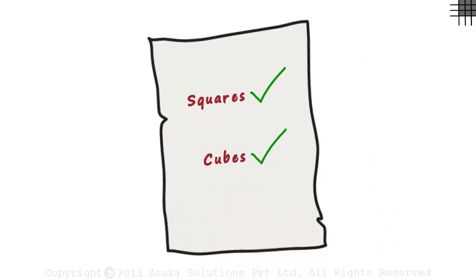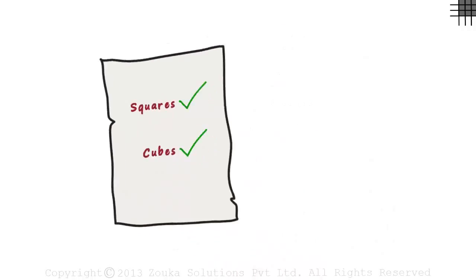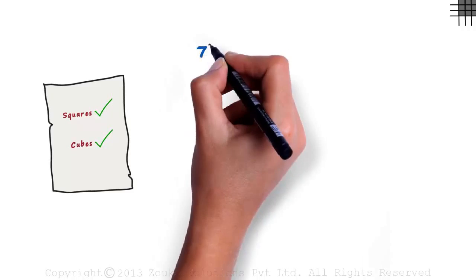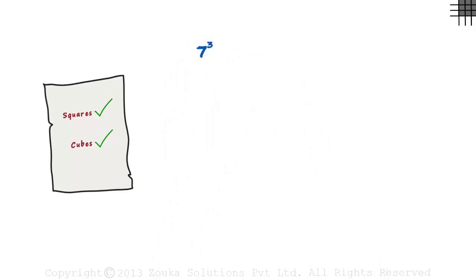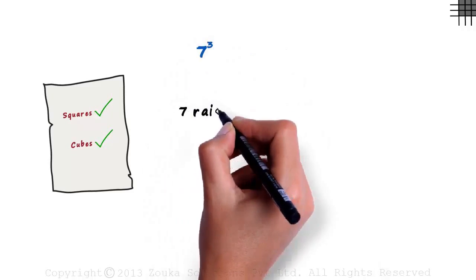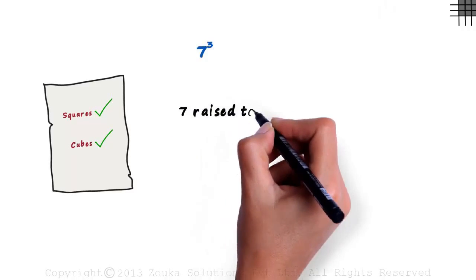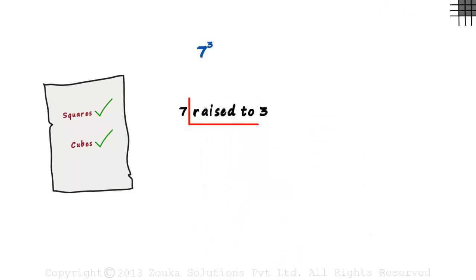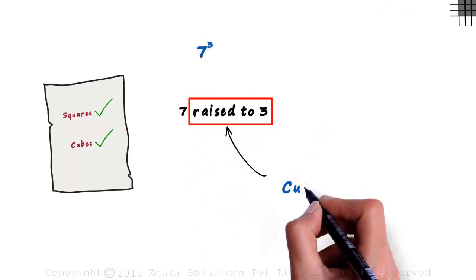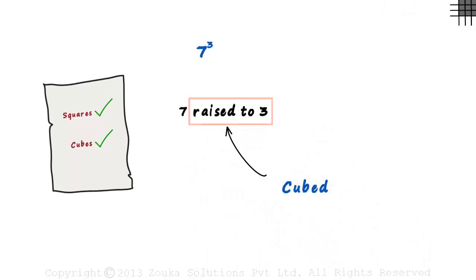Let us get to the basics first. Look at this number on the board. It is read as 7 raised to 3, and raised to 3 is called cubed. So the number can be called 7 cubed.